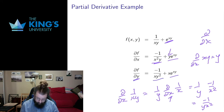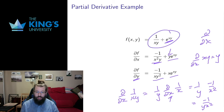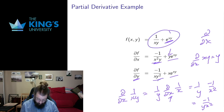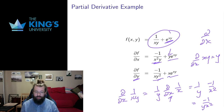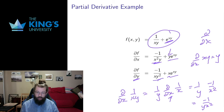I could do the partial derivative in y as well; it looks very similar but the variables are switched, and that makes sense because this function is actually symmetric in x and y. So instead of x squared I have y squared, instead of y I have x, and the same reasoning gives the partial derivative in y.